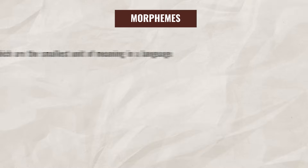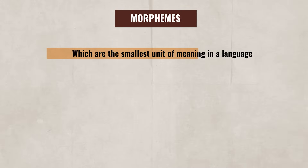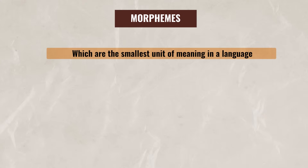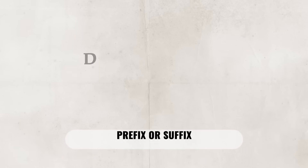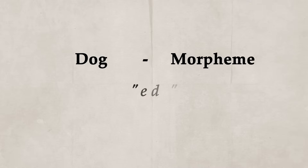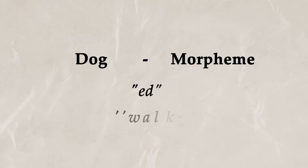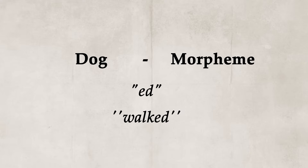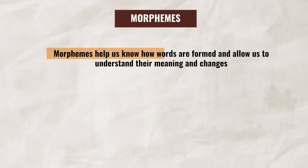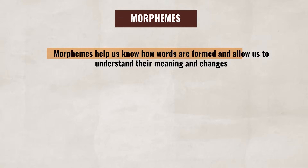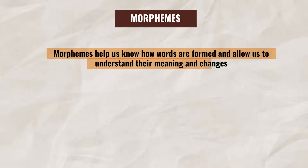Next, there are morphemes, which are the smallest unit of meaning in a language. A morpheme can be a whole word, a prefix, or a suffix. For example, 'dog' is a morpheme, but so is '-ed' added to a word, like 'walked.' When we add '-ed' to the end of 'walk,' it changes the meaning, indicating past tense. Morphemes help us know how words are formed and allow us to understand their meaning and changes.